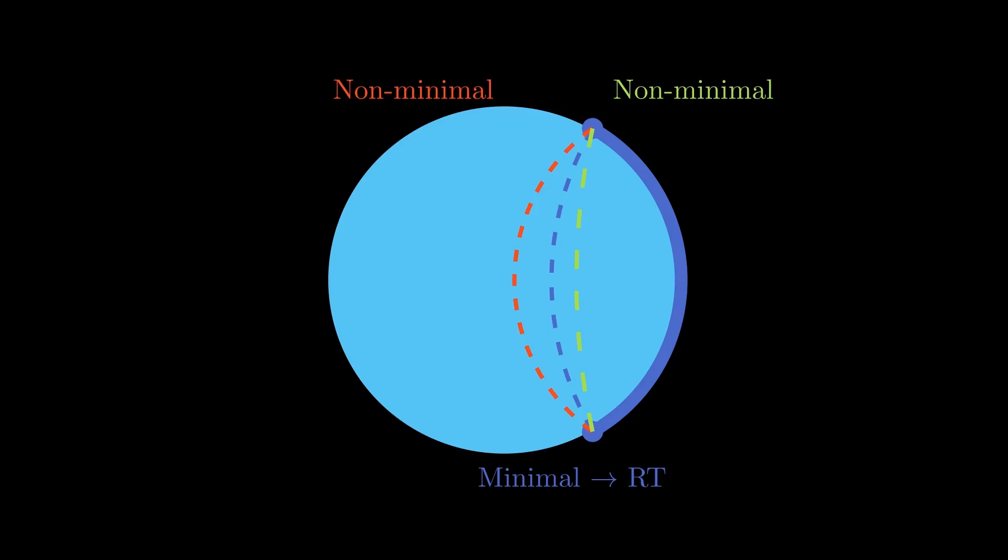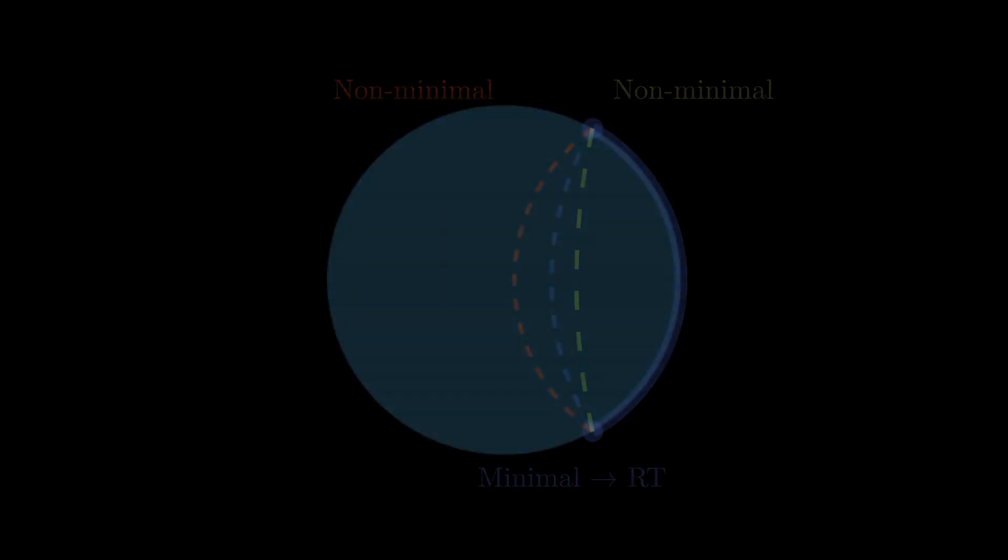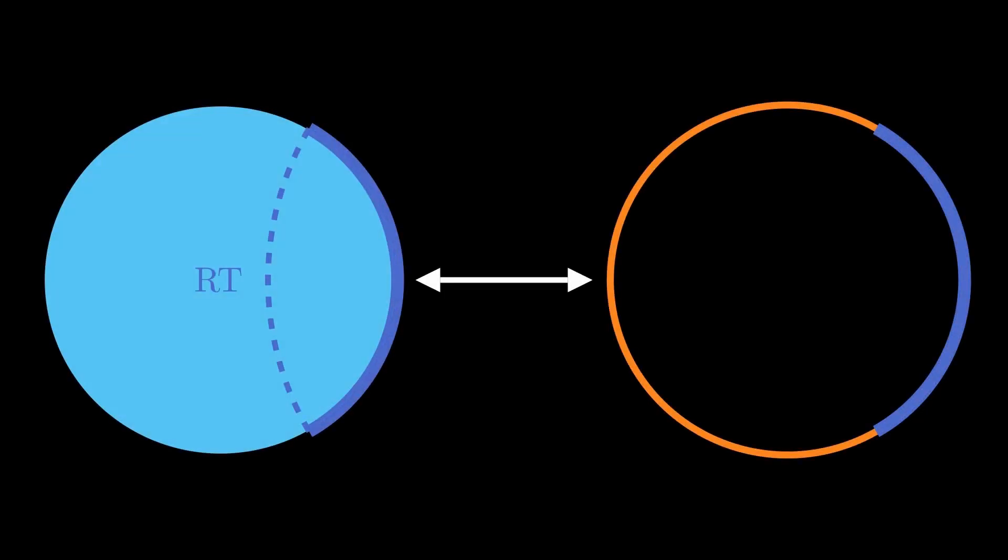There is one subtlety known as the homology constraint, but let's put that aside for now. Okay, so what does this give for the vacuum? Well, first, the minimal curve turns out to be a part of a circle. And second, the length of this curve is infinite. Remember, we said earlier that the boundary is infinitely far away. This is that same fact again. And this is physical because the CFT also has infinite entanglement arising from arbitrarily short distance field fluctuations.